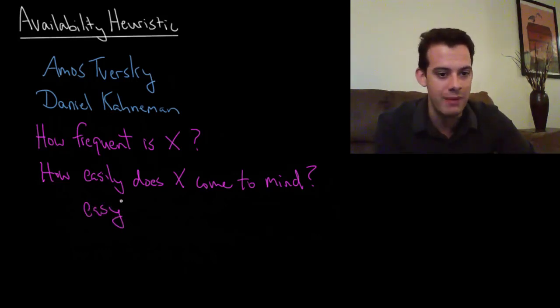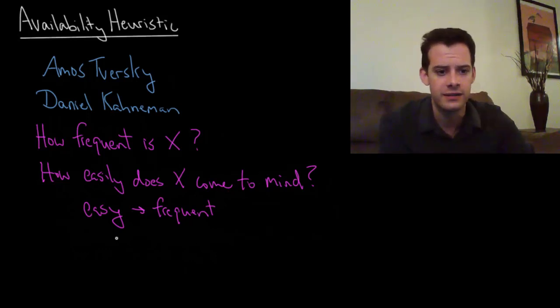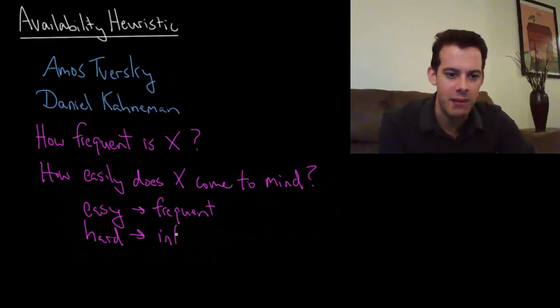And the idea is we make the assumption that if something is easy to bring to mind, if I can come up with a lot of examples of something, it's probably common, so it's probably a frequent event. But if it's really hard to bring something to mind, if I can't come up with any examples, then it's probably not very frequent.